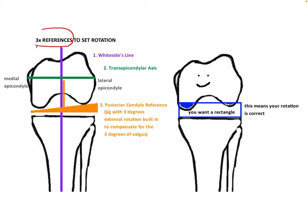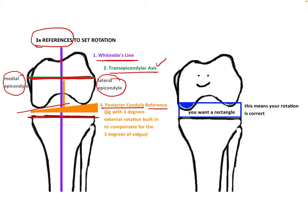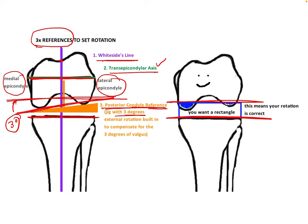There are three references we can use. The first is Whiteside's line, which is the line in the center of the trochlea perpendicular to the transepicondylar axis. The transepicondylar axis is a line joining the medial and lateral epicondyles, usually parallel to the tibial cut. The third reference point is the posterior condyle reference. The native joint line is in 3 degrees of valgus, so when using the posterior condyle as a reference, we must externally rotate by 3 degrees so that the cut made is parallel to the straight tibial cut, giving us a perfect rectangle.